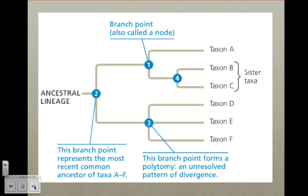Here, we can take a look at a phylogenetic tree and look at the different parts. The branch point is where the lineages divide. Sister taxa are two that share an immediate common ancestor. The basal taxon is the lineage that diverges the earliest. An ancestral lineage is the original common ancestor. Number two is the branch point that represents the most recent common ancestor for all of the taxa A through F. Number three is the branch point that forms a polytomy, an unresolved pattern of divergence. In order for it to be truly accurate, number three would only be branched into two branches.